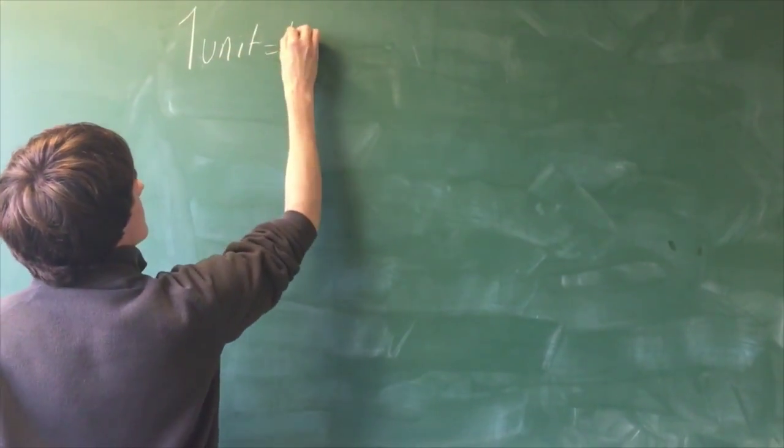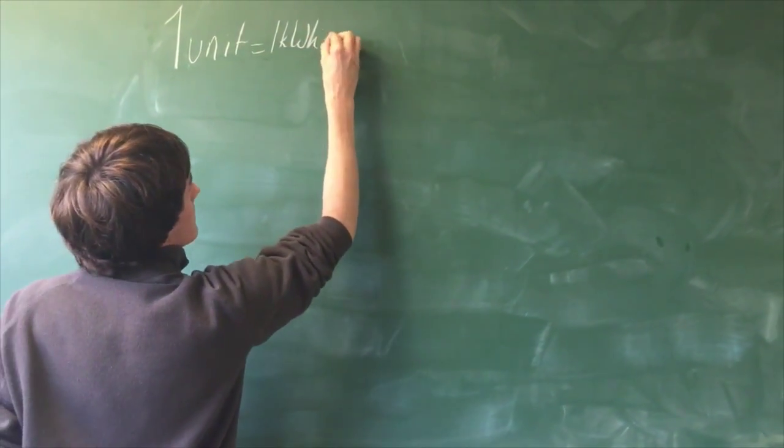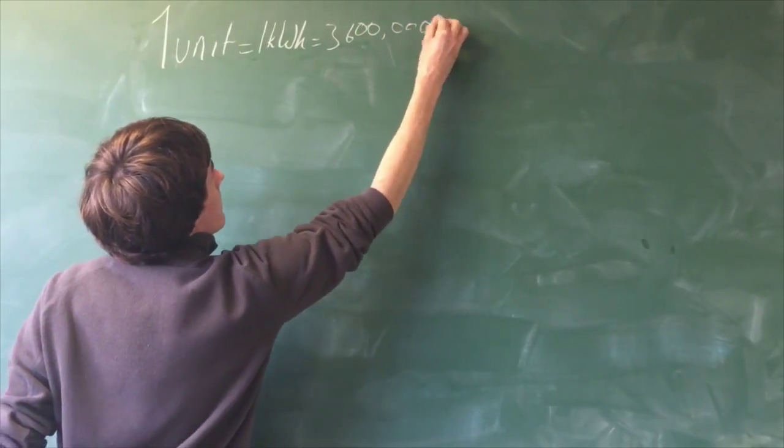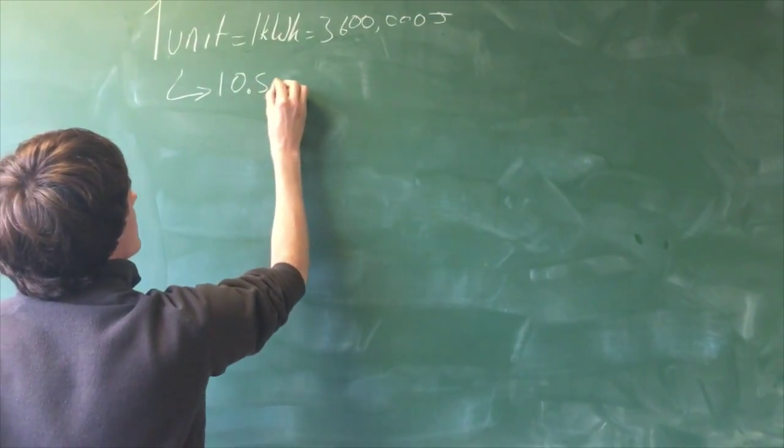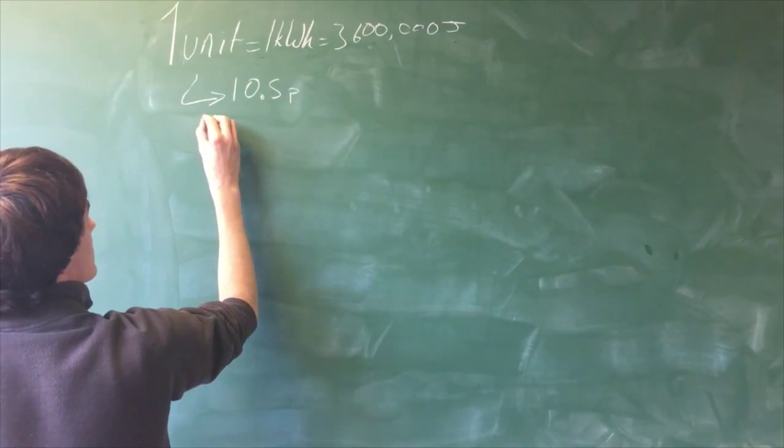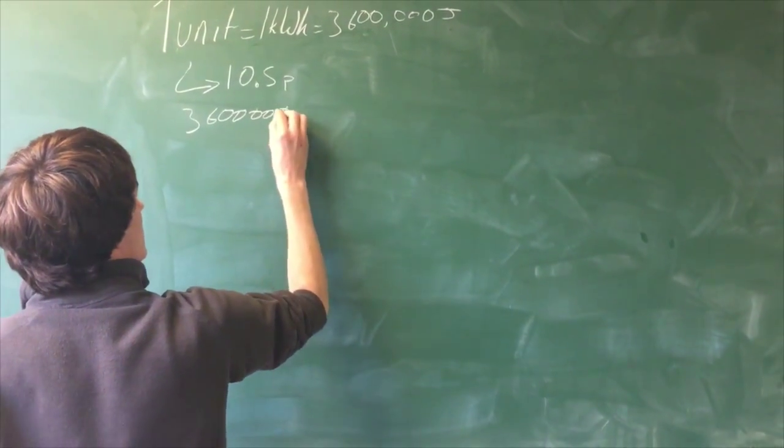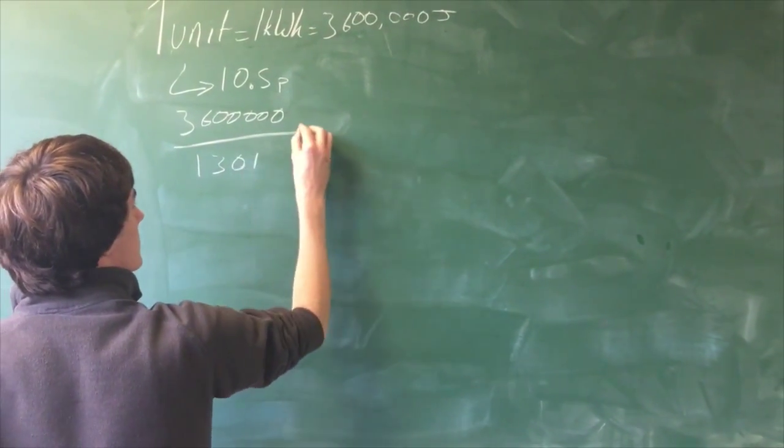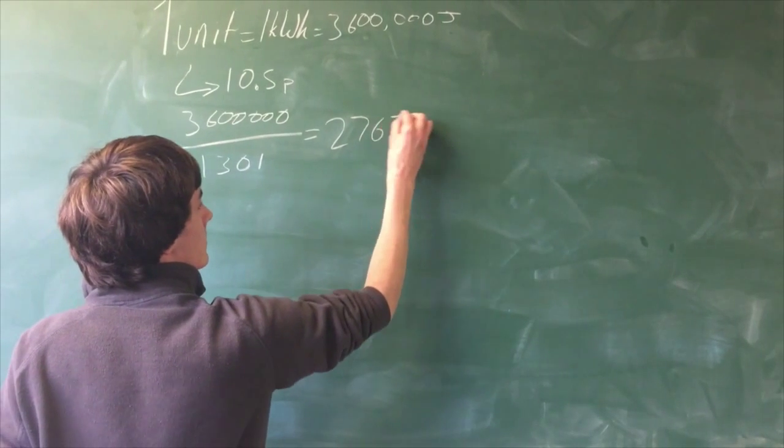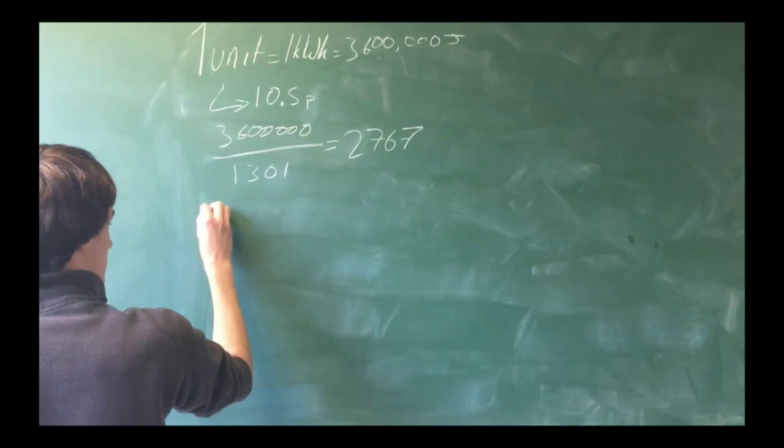One unit of energy is one kilowatt hour and costs around 10.5 pence. One kilowatt hour is 3.6 million joules. If one car travelling over one speed bump produces 1,301 joules, the number of cars required to produce one unit of energy would be roughly 2,767.